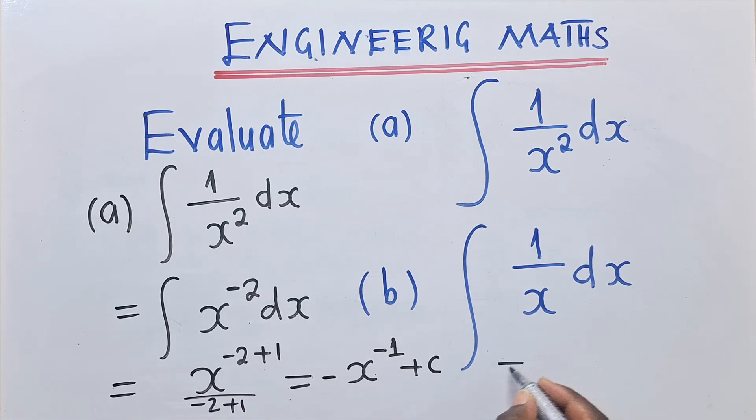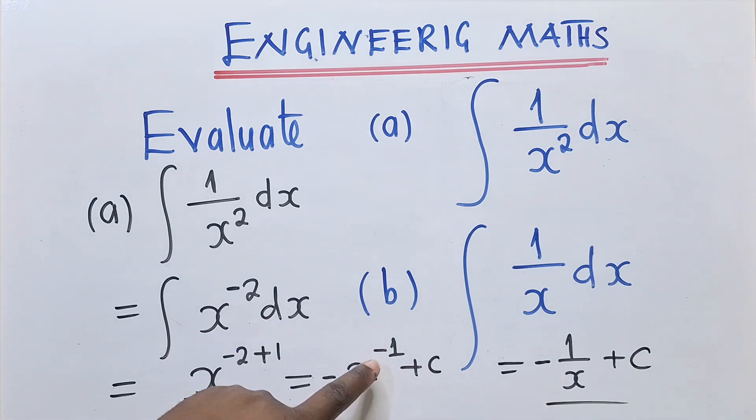And our answer can be written as negative 1 over x plus C. So this is our answer. Using the laws of indices again, this whole thing will go down here. The negative power will become a positive power right over here. I hope you've seen that one.